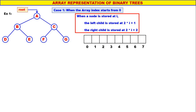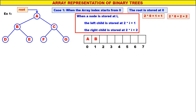This is the array with 8 elements, indices 0 to 7. The root a is stored at 0. Left child of a is b, so b is stored at 2*0+1 = 1. Right child of a is c, so c is stored at 2*0+2 = 2. Left child of b is d, so d is stored at 2*1+1 = 3. Right child of b is e, so e is stored at 2*1+2 = 4.